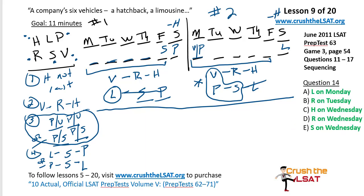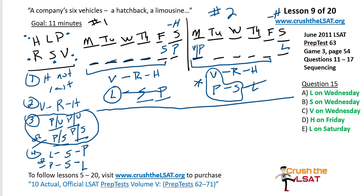Question 14: if L is not served on Saturday, each of the following could be true except. If L is not on Saturday, we know we are in scenario one. Looking at the answer choices, A through D each could be true, but E — S cannot be on Wednesday. Question 15: if S comes before P, we're in scenario one. L has the freedom to float around, so L could be serviced on Wednesday. Answer A.